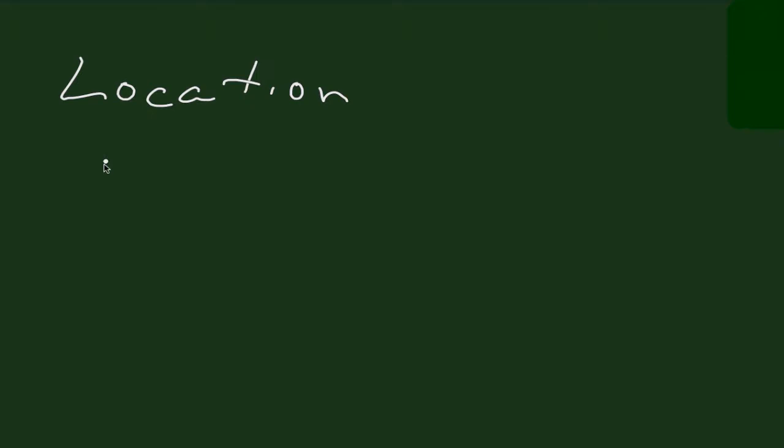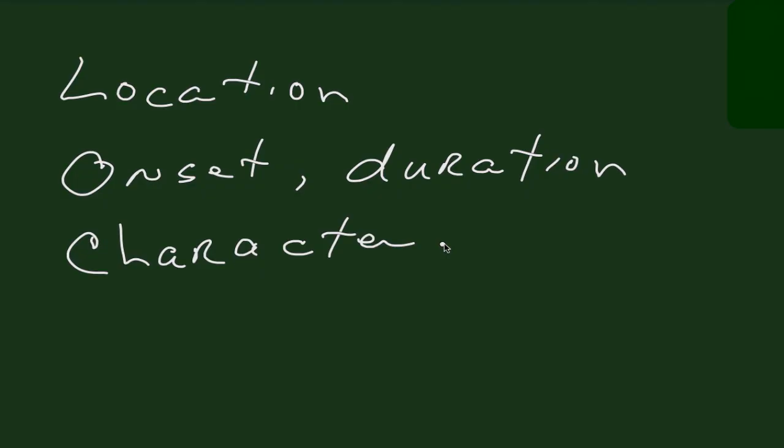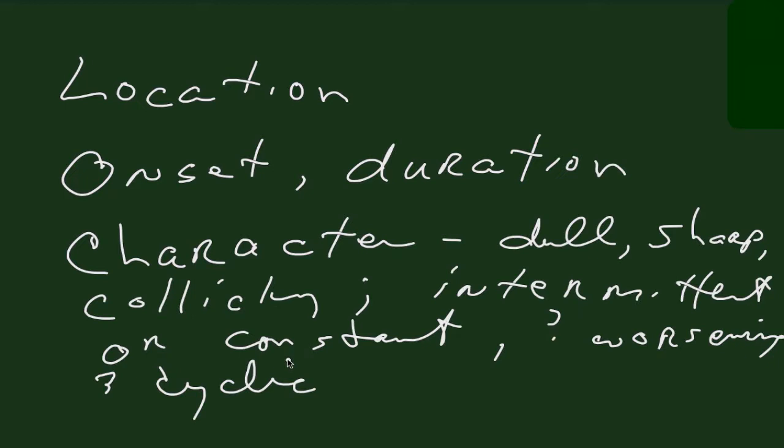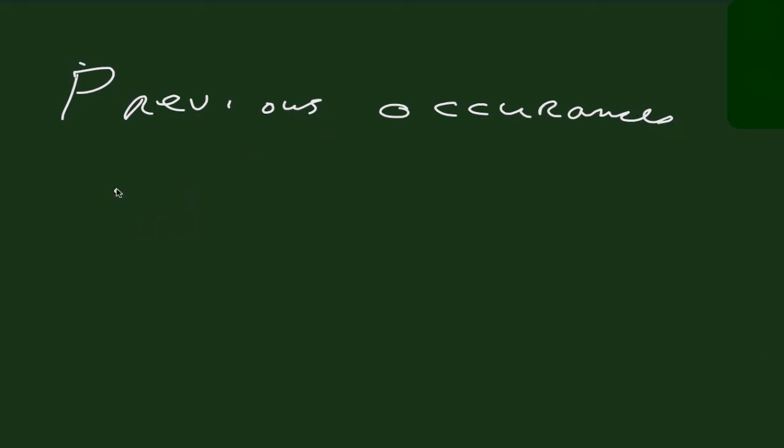Identify the location of her pain, the onset and duration, and the character. Is it dull, sharp, colicky, intermittent, or constant? Is it worsening? Is it cyclic? You want to ask if there have been previous occurrences of this pain.